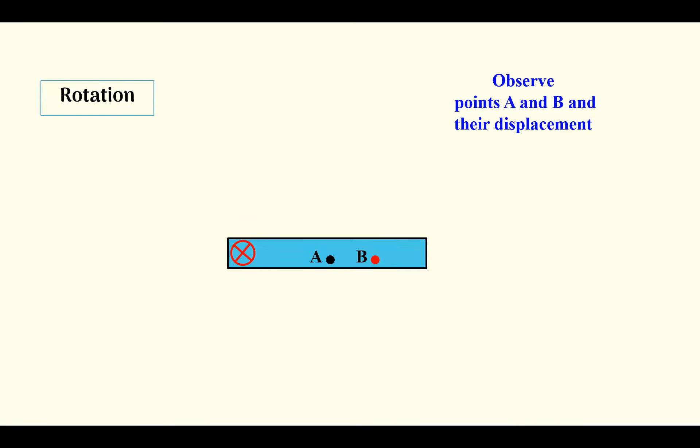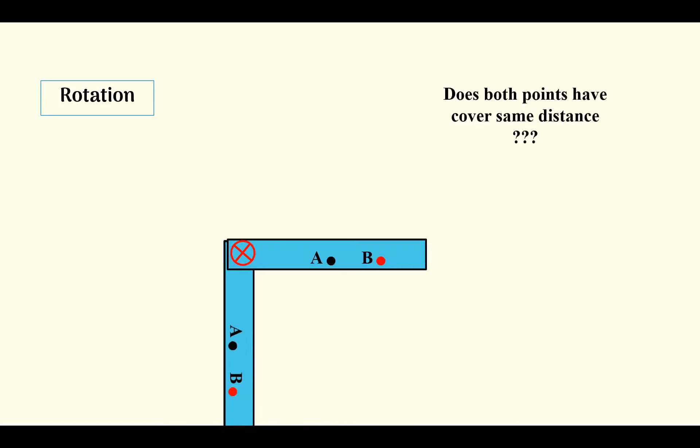Observe the points A and B. As this rod rotates in the downward direction, the points A and B also rotate in the same way. Do the points have the same distance to cover? Are they covering the same distance? No. In this case, A is traveling through a distance of S1 and B is traveling through a bigger curvature and therefore the distance over here is S2.